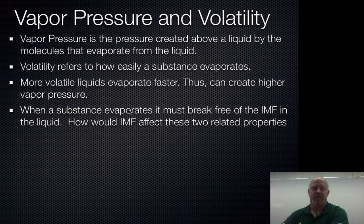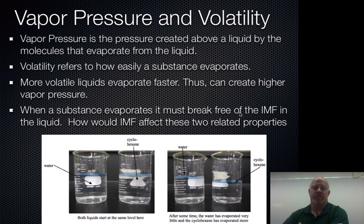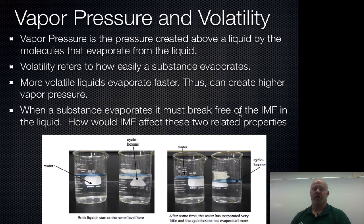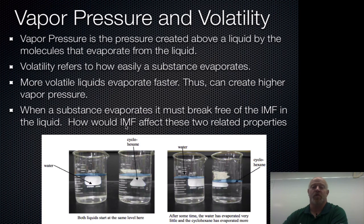When a substance evaporates, it has to break free of its intermolecular forces. So the easier it is for something to evaporate must mean that it's easier to break free, meaning it has lower intermolecular forces. We get an inverse relationship here — the stronger the force, the better it is at holding things together, which means it won't evaporate very well, the vapor pressure will be low, and it will be a less volatile substance.